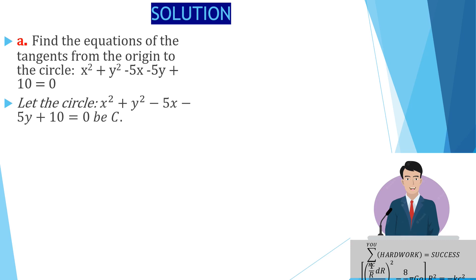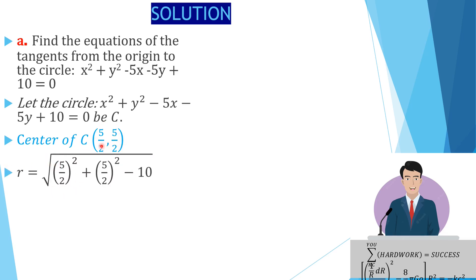To get the center of the circle, we negate the x coefficient and divide by 2 to get the x coordinate of the center, then negate the y coefficient and divide by 2 to get the y coordinate of the center. Then we get the radius by squaring the x coordinate of the center, adding it to the square of the y coordinate of the center, subtracting the constant term c, and taking the square root.